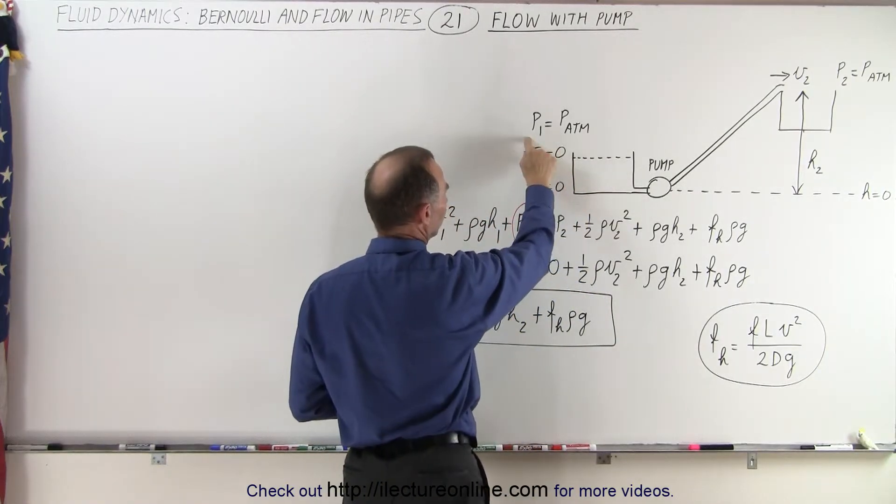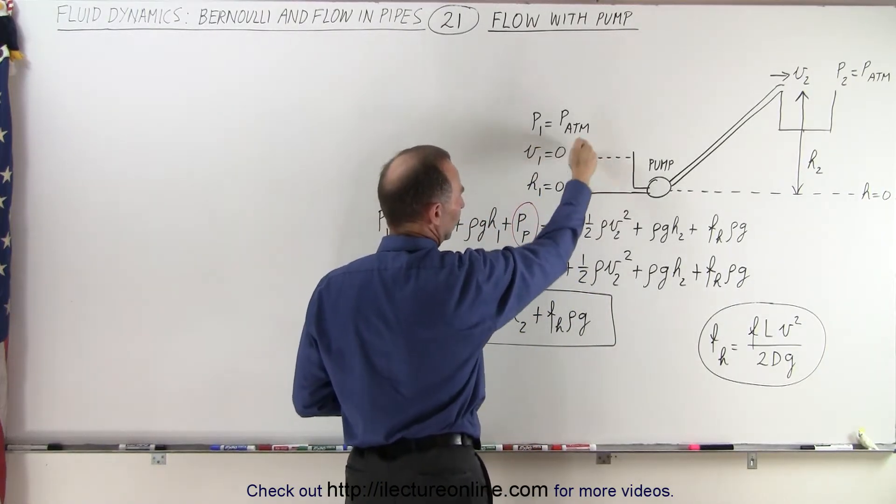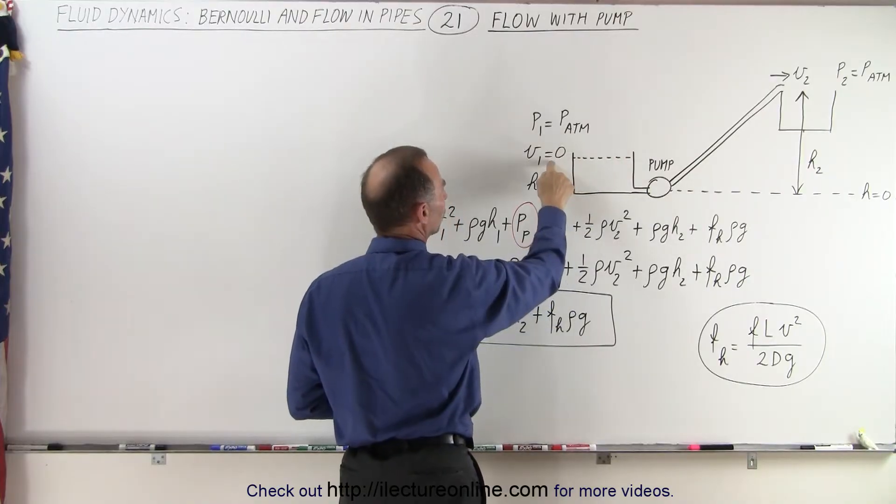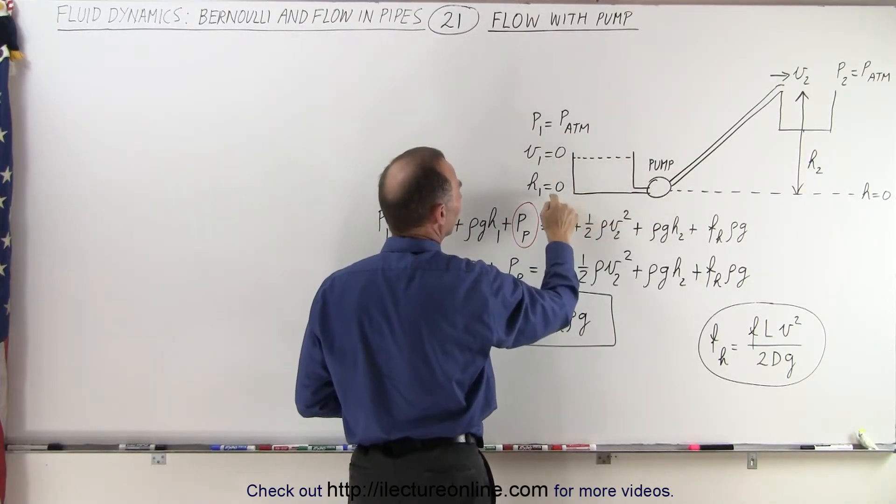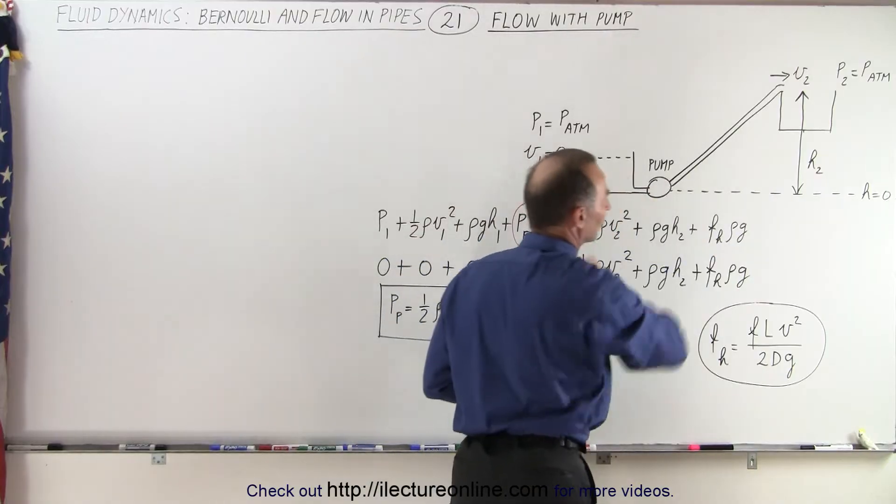Notice at the low reservoir the pressure is going to be equal to atmospheric pressure because it's open to the atmosphere. We're starting with velocity equal to zero and height equal to zero because we're going to call that a reference height.